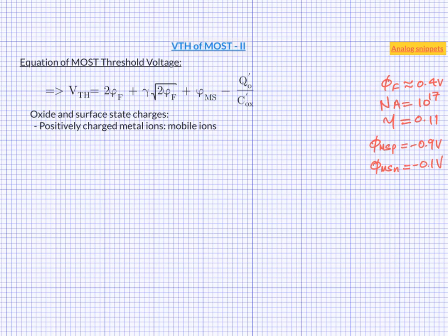Second source of these charges is fixed surface states or interface charges. Then there can be oxide trap charges, for example electrons or holes trapped inside the oxide. One way these trap charges can be created is by hot carrier injection. Let's stop our list here by just saying that there are multiple origins of these charges.